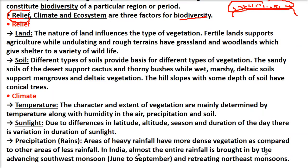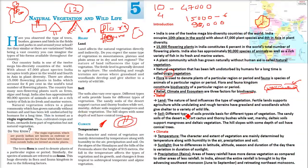Precipitation is mainly defined in Indian terms by the advancing monsoon and the retreating monsoon.